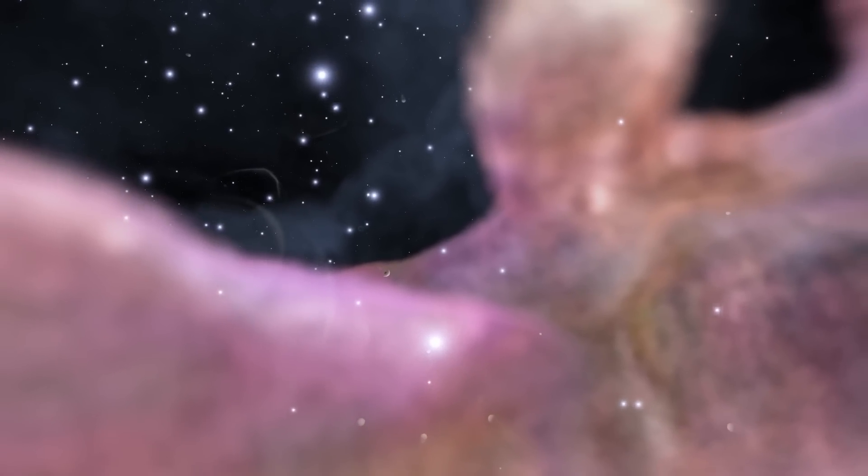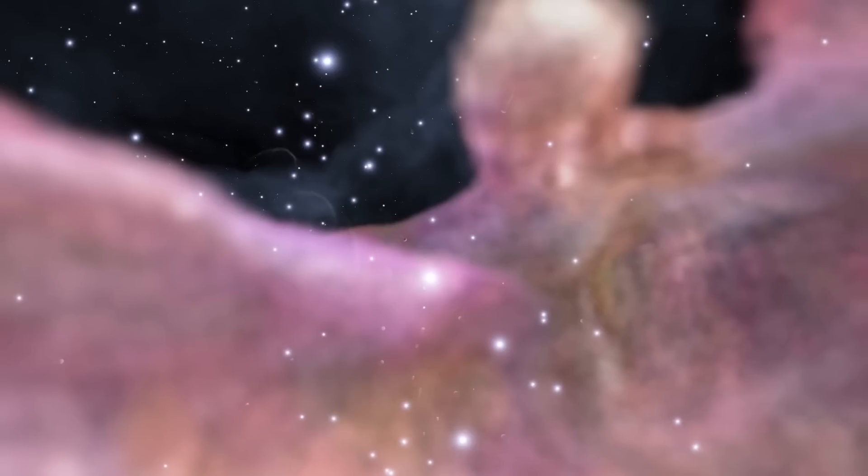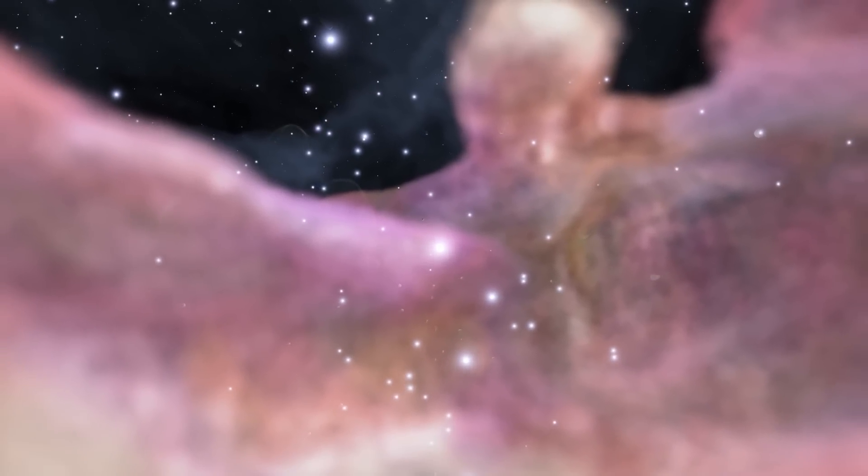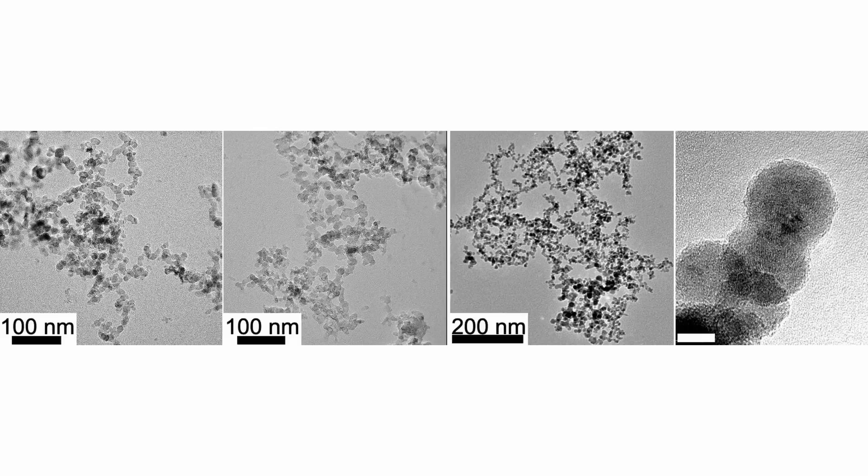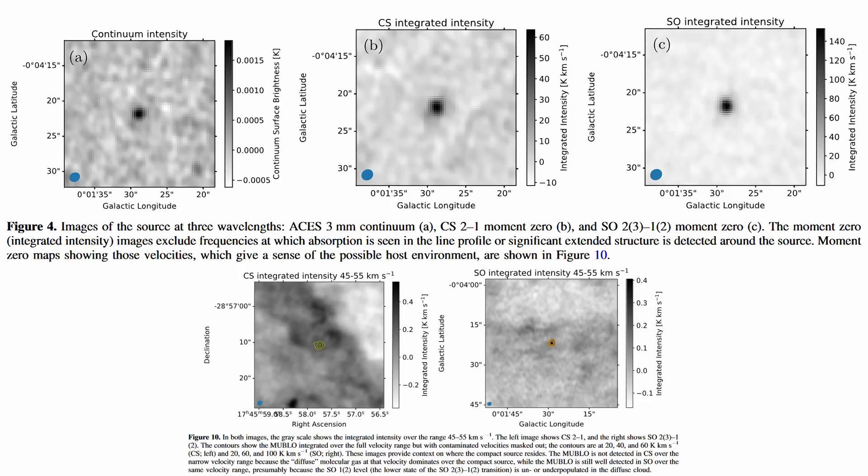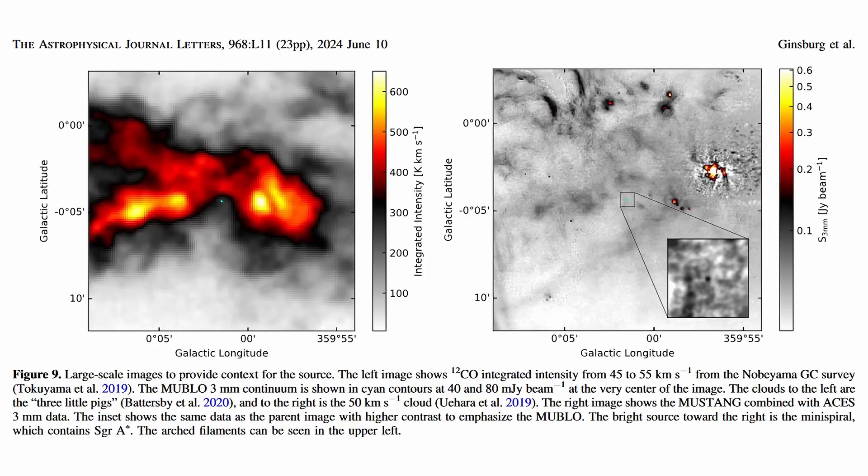Furthermore, the dust temperature being below 50 K also contradicts the typical dust heating expected from interstellar radiation inside the central molecular zone. Dust grains in such environments usually absorb ultraviolet and visible light, re-emitting it in the infrared and sub-millimeter wavelength at warmer temperatures. The cold dust in the MUBLO implies either an unusual lack of interaction with such radiation fields, or a different composition or distribution of dust that affects its thermal properties. This anomaly complicates our understanding of the energy balance and thermal dynamics within the MUBLO, suggesting that it might be insulated from extreme heat sources, or that it possesses a unique physical property that modulates its temperature differently from other central molecular zone objects.